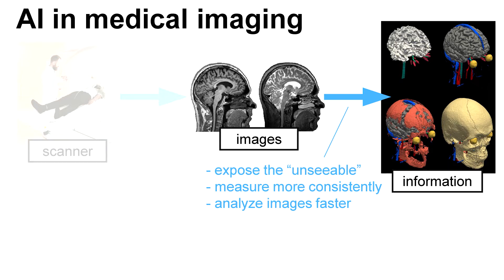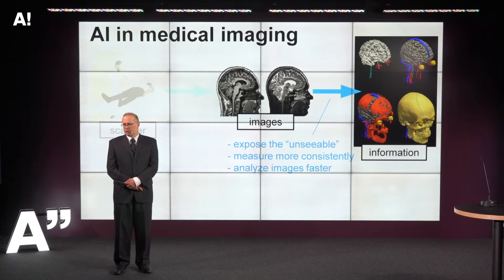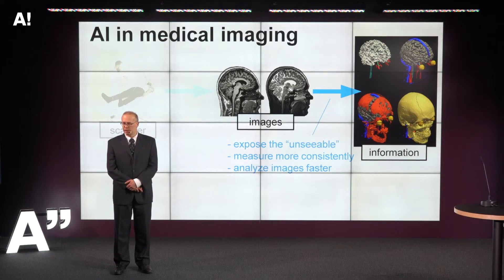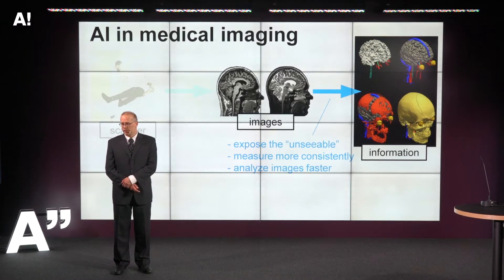In this case, I show so-called segmentation — a delineation of different structures — so you can analyze volume or use it in treatment planning. It can also be automatic diagnosis or checking whether a certain medication is working for a specific patient. There are two or three points where AI can really help: exposing things you cannot see with the naked eye, measuring more consistently, and analyzing much faster than humans.